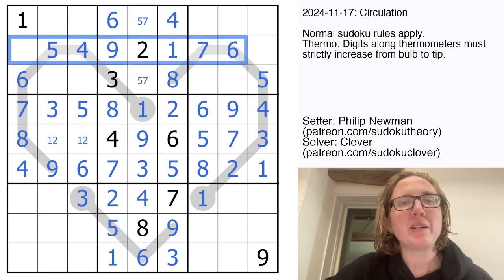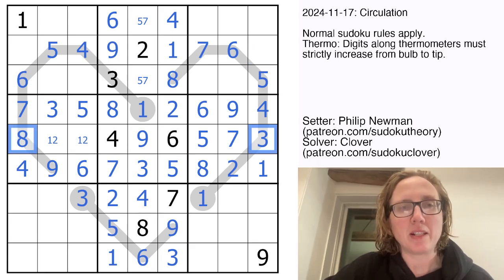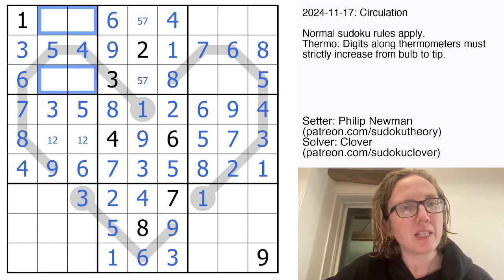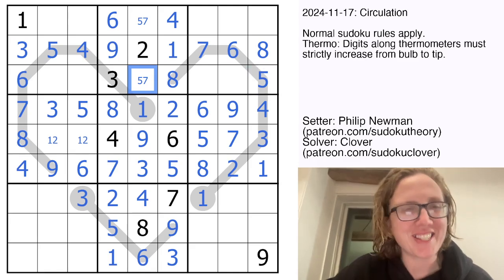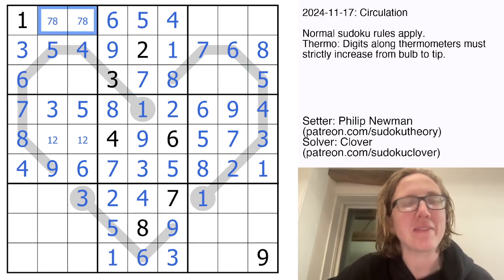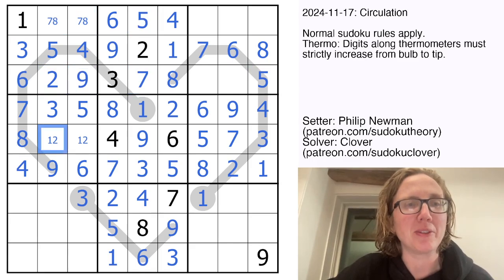To finish this row I need a three and an eight, I have threes and eights in columns one and nine already so they will go there and there. Here I need two seven eight and nine, I should probably resolve this five seven pair that's just sitting here first because that tells me the seven and eight will go here and the two and nine will go in those two positions.